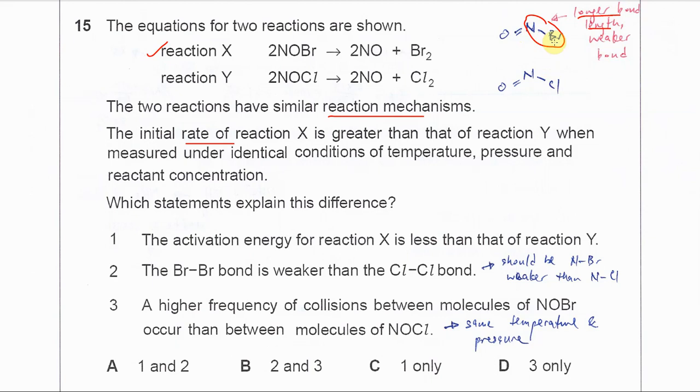When it's easy to break, it can form the products faster, and the activation energy for the NBr is of course lower.